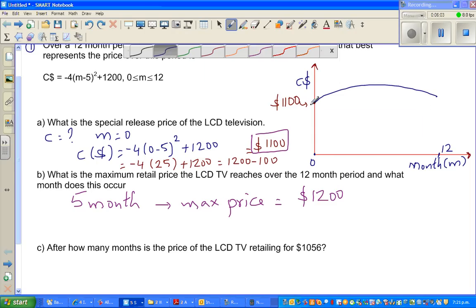Graphically, what does that mean? This is the 12th month. The 5th month, somewhere here, you reach the maximum price of $1,200.